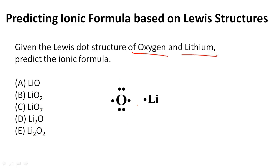Here they've given us the Lewis dot structure of oxygen and lithium, and we have to use that to figure out the ionic formula for Li and O.